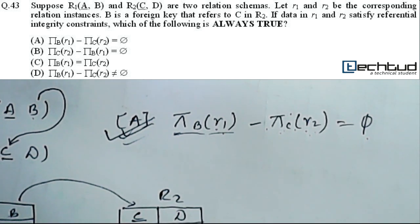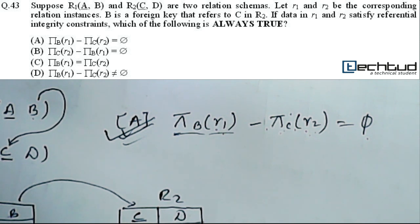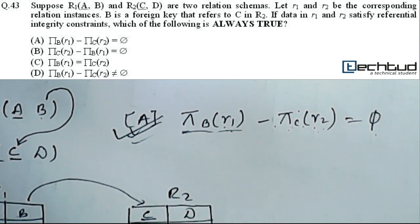Apart from option A, all the other options may be true sometimes depending on a particular database instance, but not always. It has been highlighted here that the answer must be always true — and that is why option A is the correct choice. I hope this is clear. If you have any doubt, please go to the doubt section and ask your question. Thanks for watching.